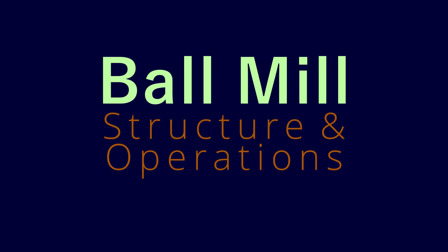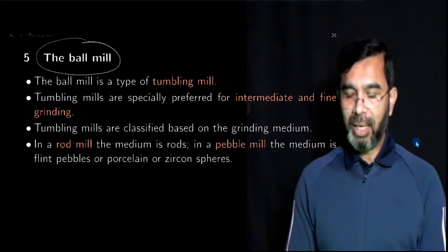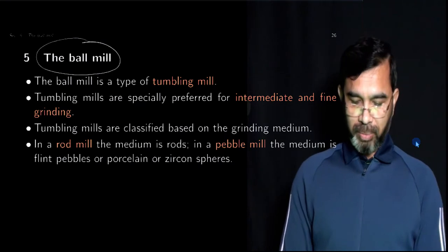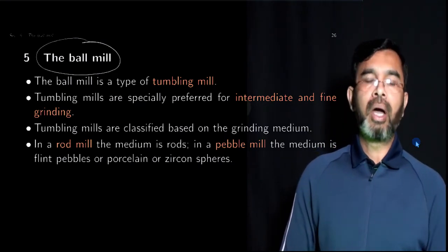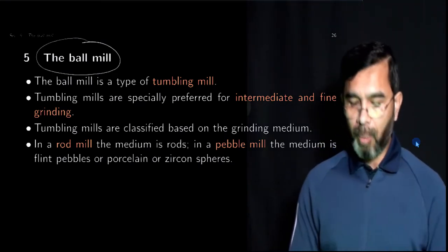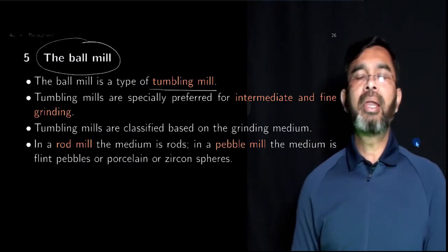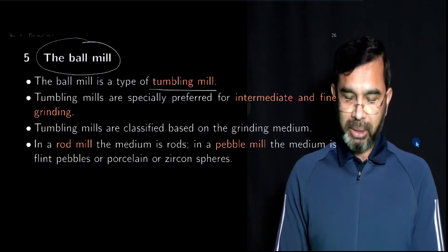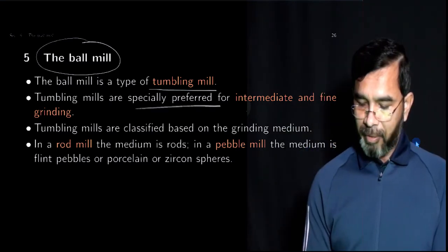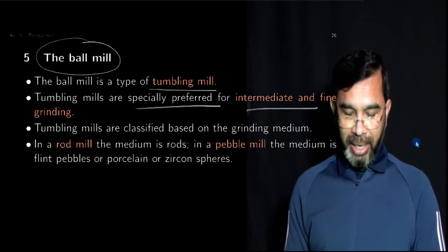In this session, we talk about the ball mill, which is one of the tumbling mills used in many industries. We'll discuss its structure, how it works, and its operating principles. As mentioned, it's one type of tumbling mill which belongs to the grinder's type. These are especially preferred for intermediate and fine grinding.